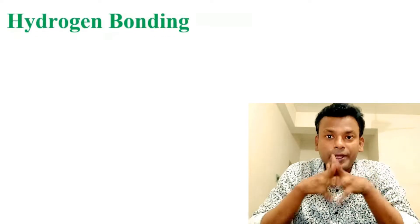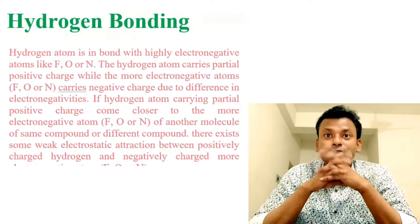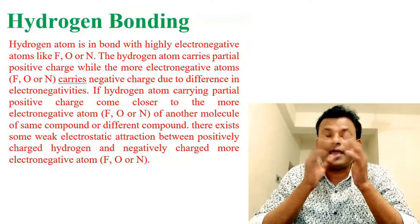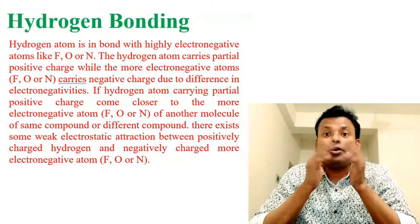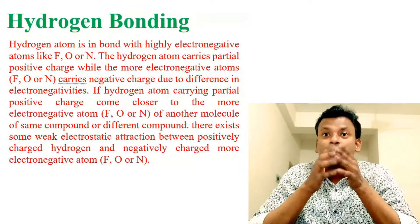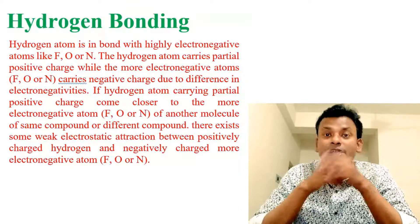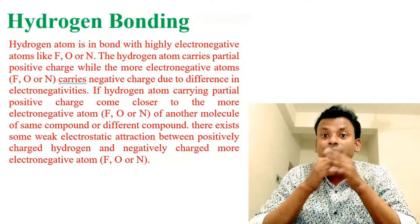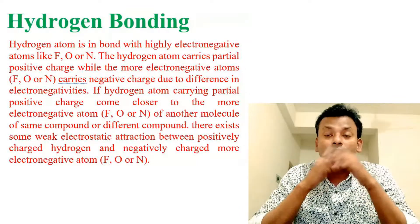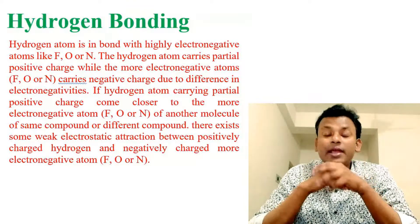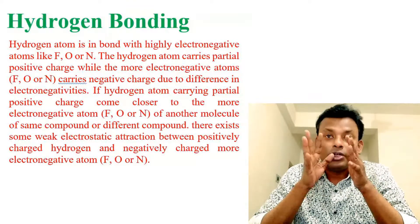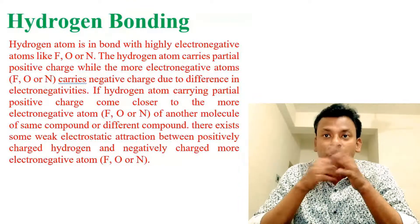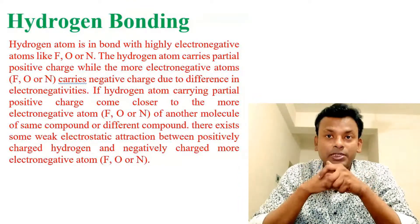Hydrogen bonding: when a hydrogen atom is bonded with a highly electronegative atom like fluorine, oxygen, or nitrogen, the hydrogen atom carries a partially positive charge while the more electronegative atom — fluorine, oxygen, or nitrogen — carries a negative charge due to the difference in electronegativities.